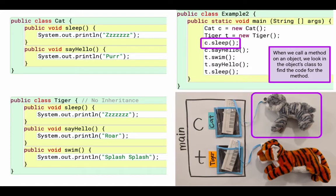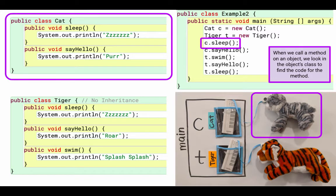Okay, so c is an object of type, or is referencing an object of type cat. So the object is a cat, and so we're going to look in the cat code up at the top left for that method. And we do find a sleep method. So it prints those z's.